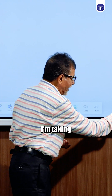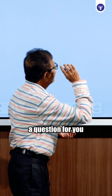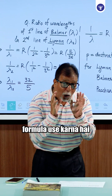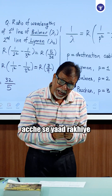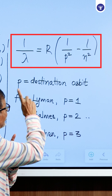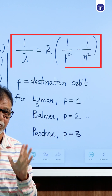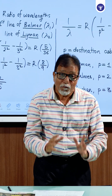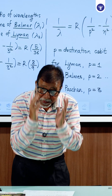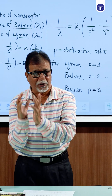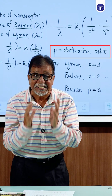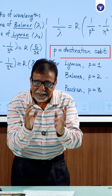This is a neat question and I am taking a question for you. For this question, we have to use the formula. The formula is: 1 upon lambda is equal to R into (1 upon P squared minus 1 upon n squared). In this formula, P stands for the destination orbit.